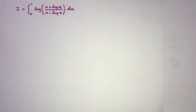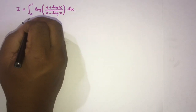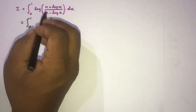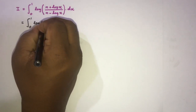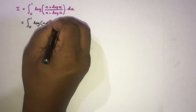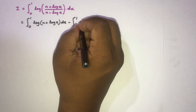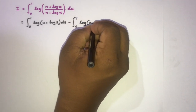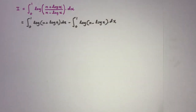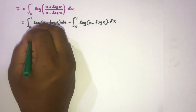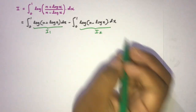How do we begin? First, we know according to the properties of natural log, we can split this integral into two different integrals. We can write the integral of natural log of (n plus natural log of x) dx, then minus the integral from 0 to 1 of natural log of (n minus natural log of x) dx. I am going to call this integral I1 and this integral I2.